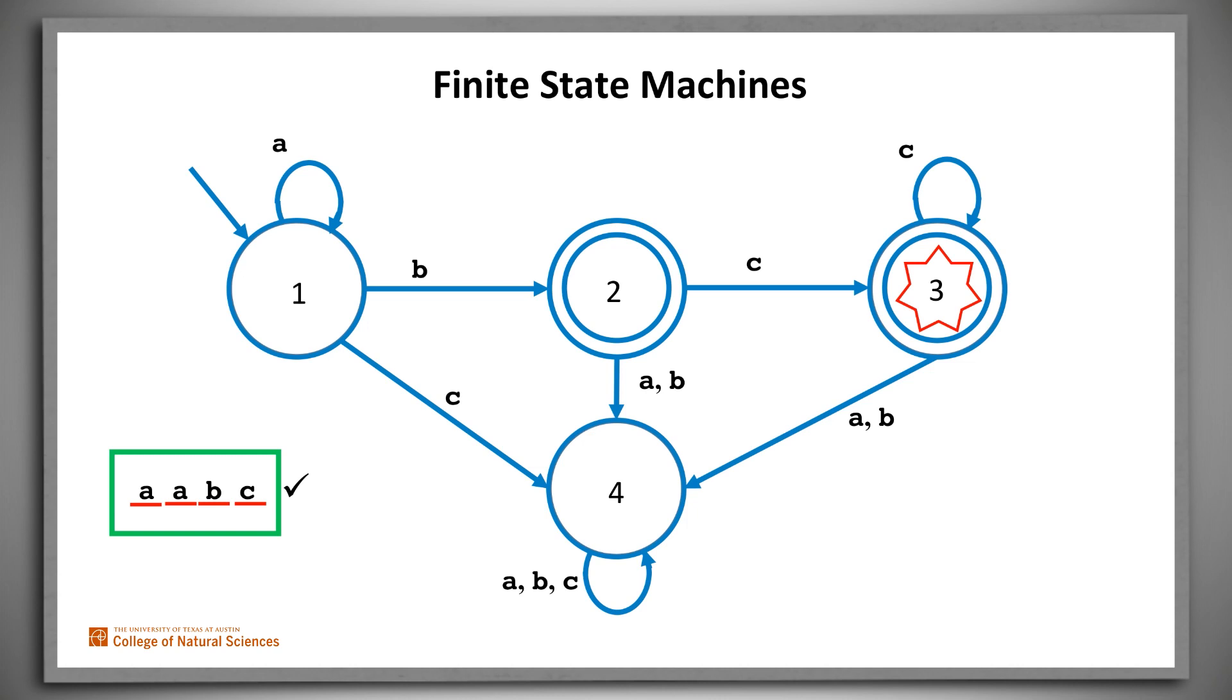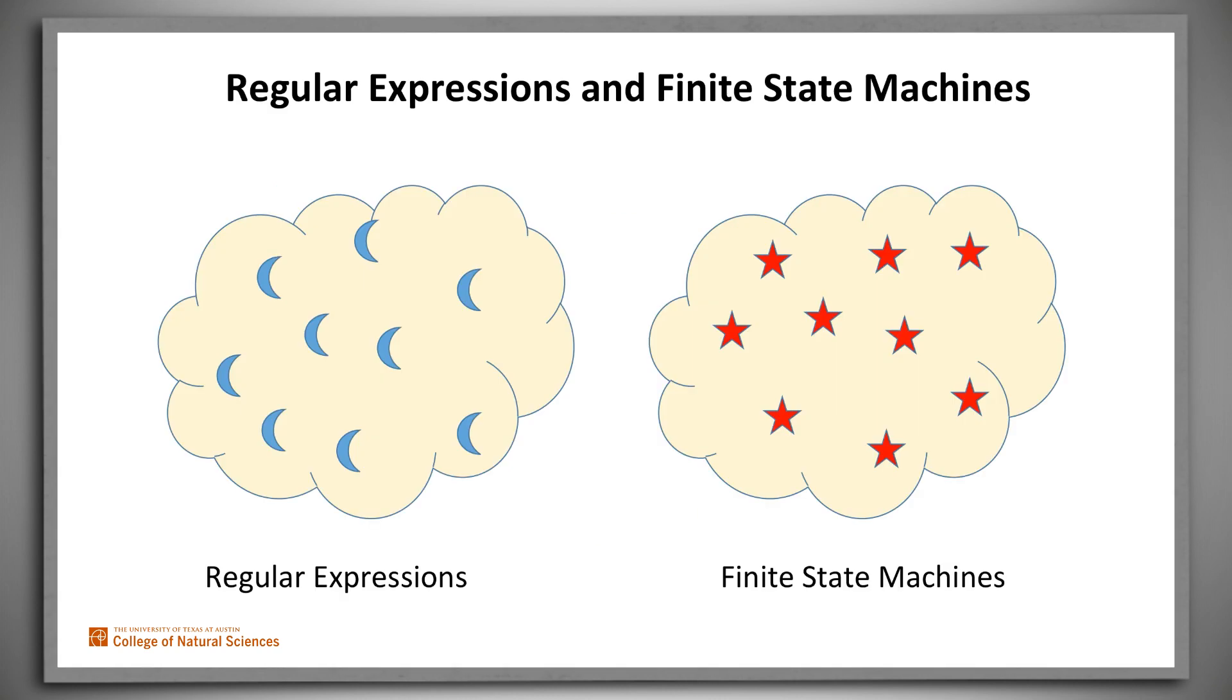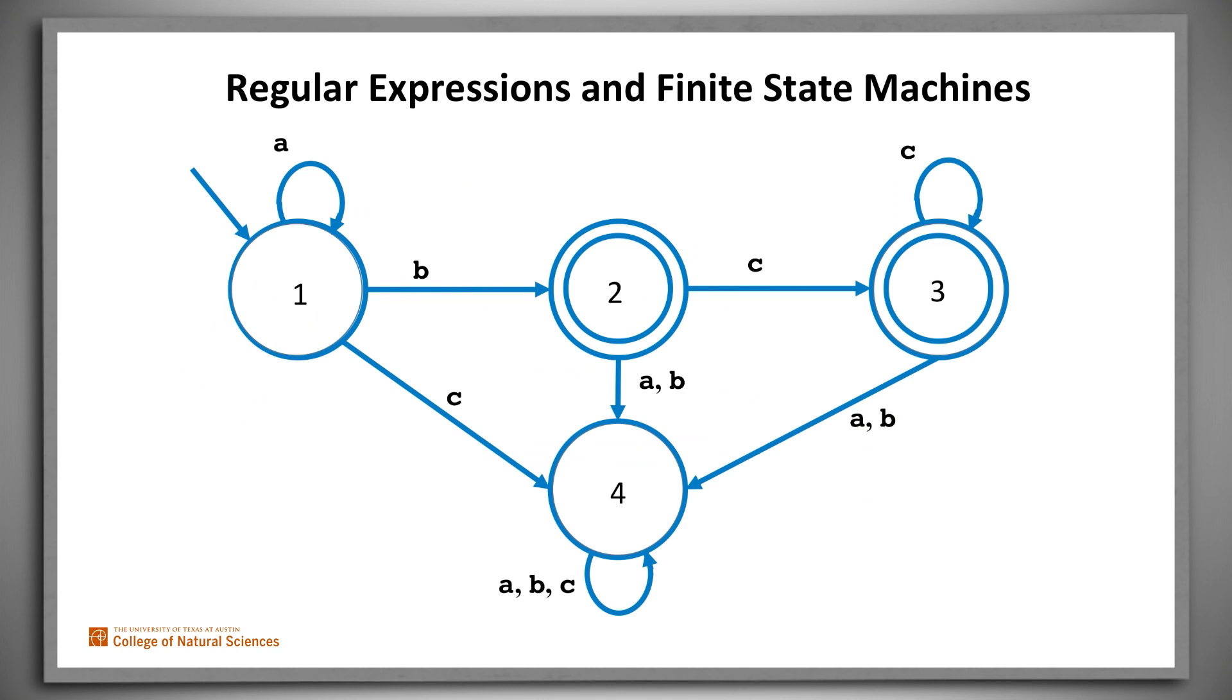Now consider the following claim. Assume the definitions of regular expressions and finite state machines that we've just described. Then the two formalisms are equivalent. By that we mean that the set of languages that can be described by some regular expression is exactly the same as the set of languages that can be accepted by some finite state machine. Another way to say that is that for every regular expression there's an equivalent, in other words corresponds to the same language, finite state machine, and vice versa. For example, this finite state machine accepts exactly the strings that match this regular expression. Any number of A's, followed by a single B, followed by any number of C's.